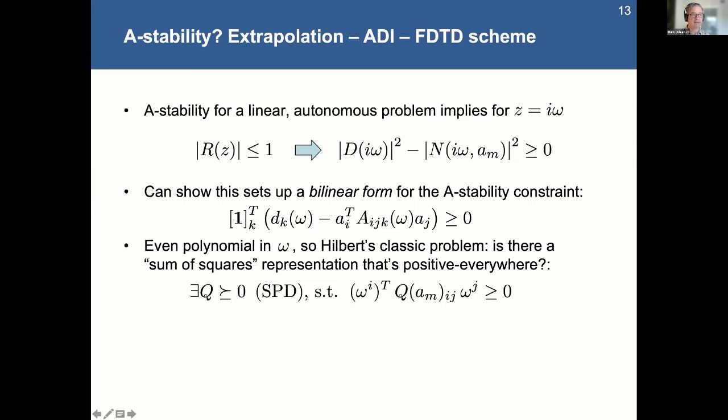Anyway, so you can basically turn this equation into something that is this, which is can I find some symmetric positive definite Q, which corresponds to what's inside of here, such that all of my powers of omega line up nicely. And they look like a sum of terms that are sum of terms that are squares themselves, therefore guaranteeing that they're always greater than or equal to zero.